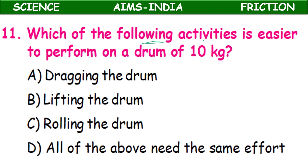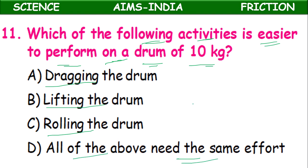Eleventh question: Which of the following activities is easier to perform on a drum of 10 kg — dragging, lifting, rolling, or all need the same effort? Rolling the drum will be easier because if we roll it, it can be moved easily compared to dragging and lifting, since rolling friction is lesser. Answer: option C.